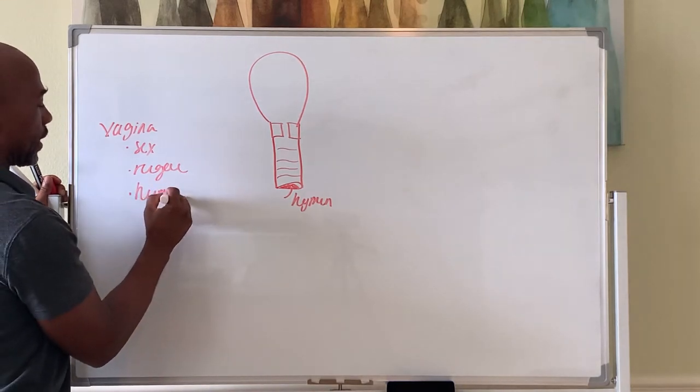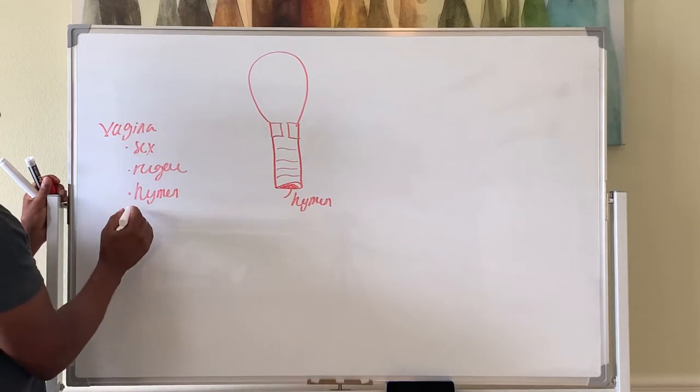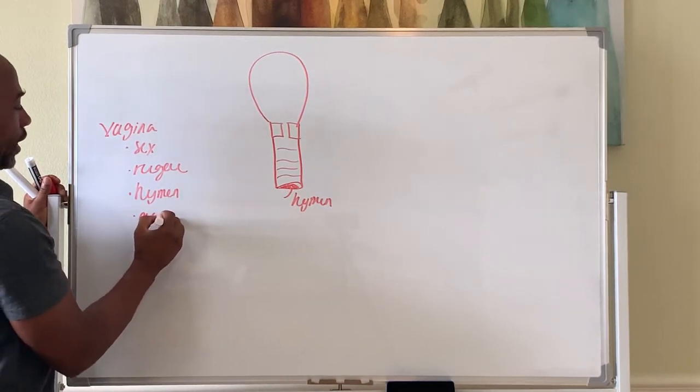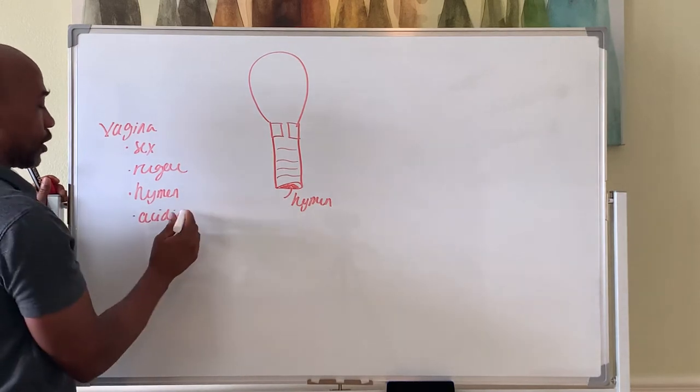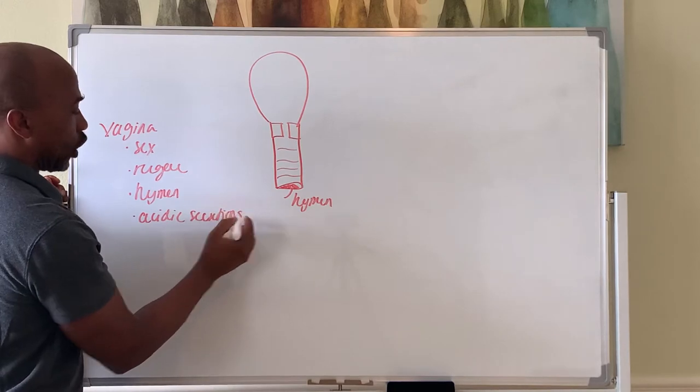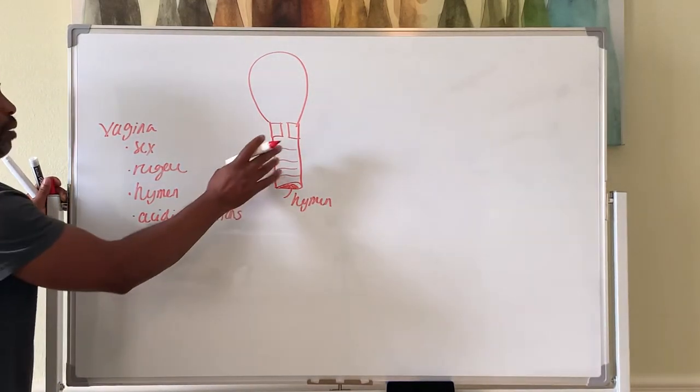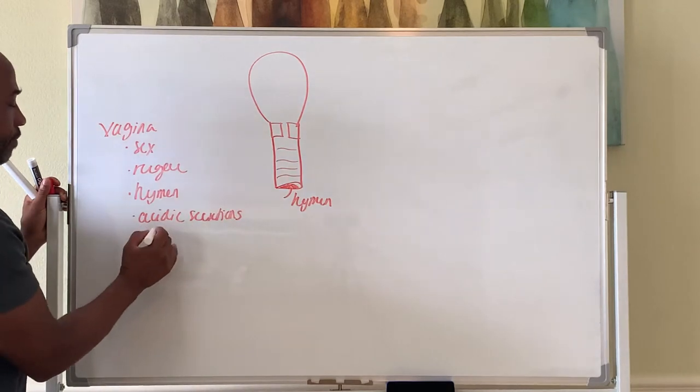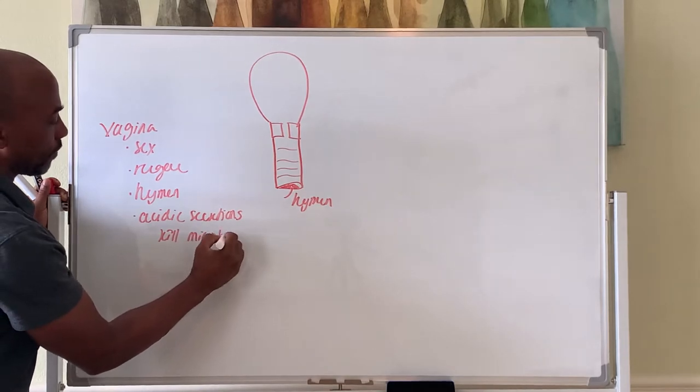The hymen is the mucosa layer, the inner layer that partially covers the orifice of the vagina. Here you have glands that make very acidic secretions that kill bacteria or other microbes that may try to populate the vagina. It kills microbes, not all of them but some of them.